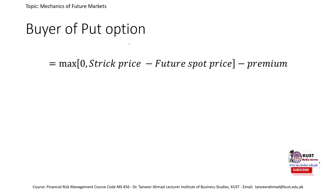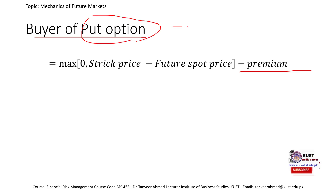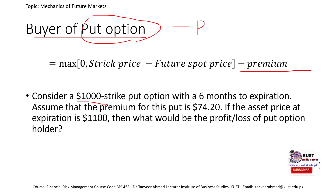The next case is the buyer of the put option. The formula differs from the call option: instead of subtracting the strike price from the future spot price, we subtract the future spot price from the strike price. The premium is negative because the buyer is paying it. Consider an example with a strike price of 1000, premium of 74.2, and asset price at expiration of 1100. What is the profit or loss of the put option holder?